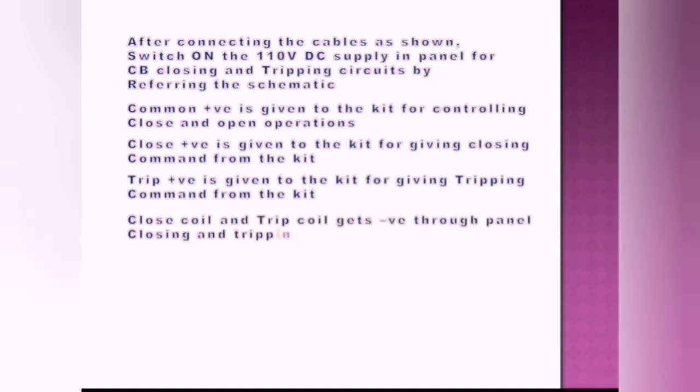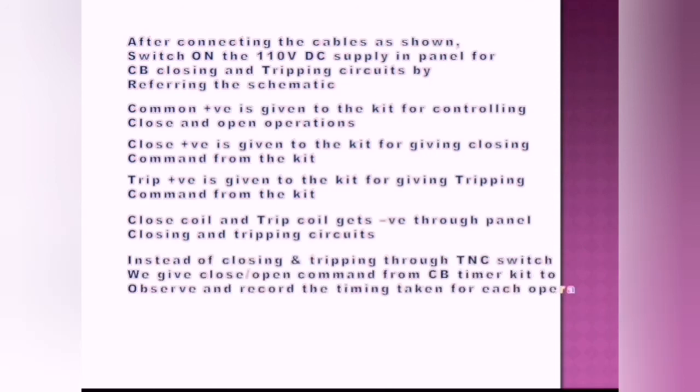Close coil and trip coil get negative through panel closing and tripping circuits. Instead of closing and tripping through TNC switch, we give close and open commands from the CB timer to observe and record the timings taken for each operation.